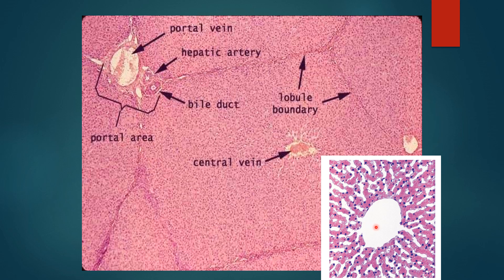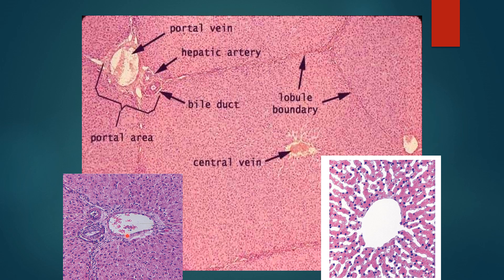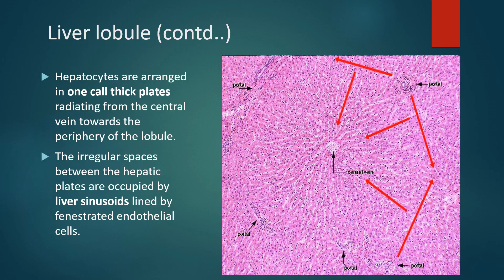At higher magnification of the central vein area, radiating cords of hepatocytes are formed. These radiating cords or plates are one or sometimes two cells thick. At higher magnification of the portal area, the bile duct is lined by simple cuboidal epithelium, alongside the portal vein and hepatic artery. Hepatocytes are arranged as one-cell-thick plates radiating from the central vein towards the periphery, and the irregular spaces between the hepatic plates are occupied by the liver sinusoids.